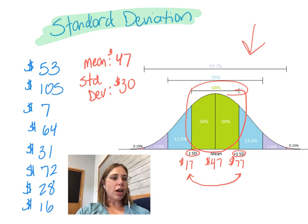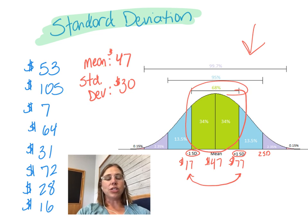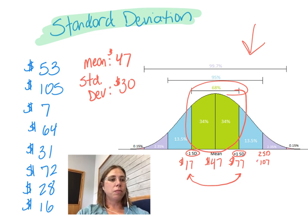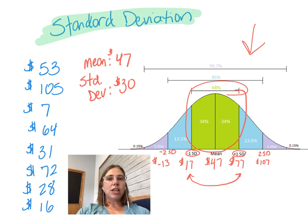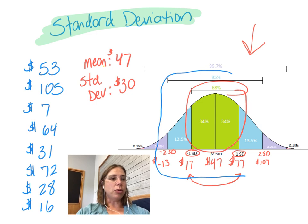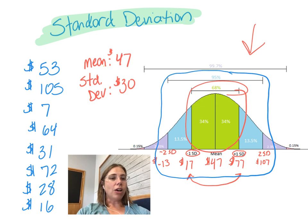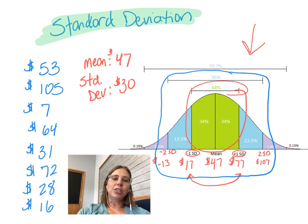As we keep going out on this graph, now we would get to two standard deviations. That would be adding on another standard deviation, or another $30, so now you'd be at $107. And we could do minus two standard deviations this way, or subtract another $30 — now we're going to be in the negatives at negative $13. What we're saying now is that 95% of people surveyed would have a bank account somewhere between negative $13, meaning they owe money, or up to $107.